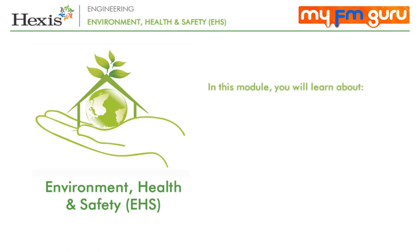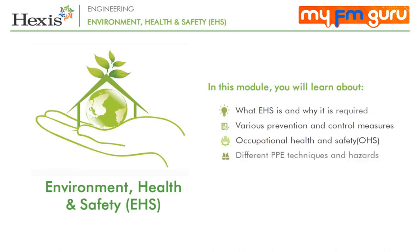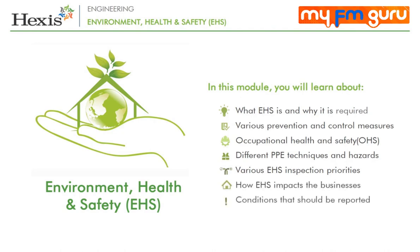By the end of this course, you should be able to understand what EHS is and why it is required, learn various prevention and control measures, overview of occupational health and safety including general facility design and operation, communication, physical and chemical hazards, examine different PPE techniques and hazards, learn various EHS inspection priorities, understand how EHS impacts the businesses, and determine conditions that should be reported.